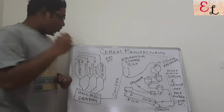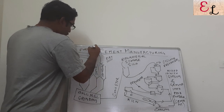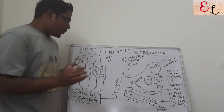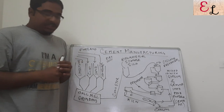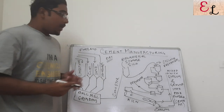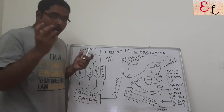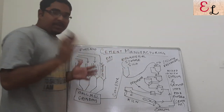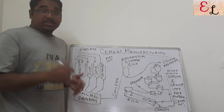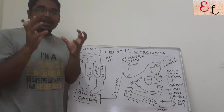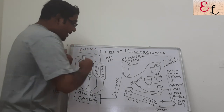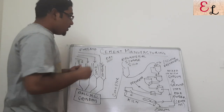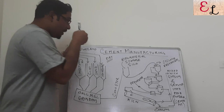We are going to discuss Portland cement manufacturing, specifically the dry process. There are two basic types: the dry process and the wet process. In the dry process, raw materials in powderous or ore form are mixed together in dry nature and fed into the reaction chamber to produce cement. In the wet process, dry materials are mixed with water to prepare a slurry, which is pumped into the furnace or reactor to produce clinker and then cement.